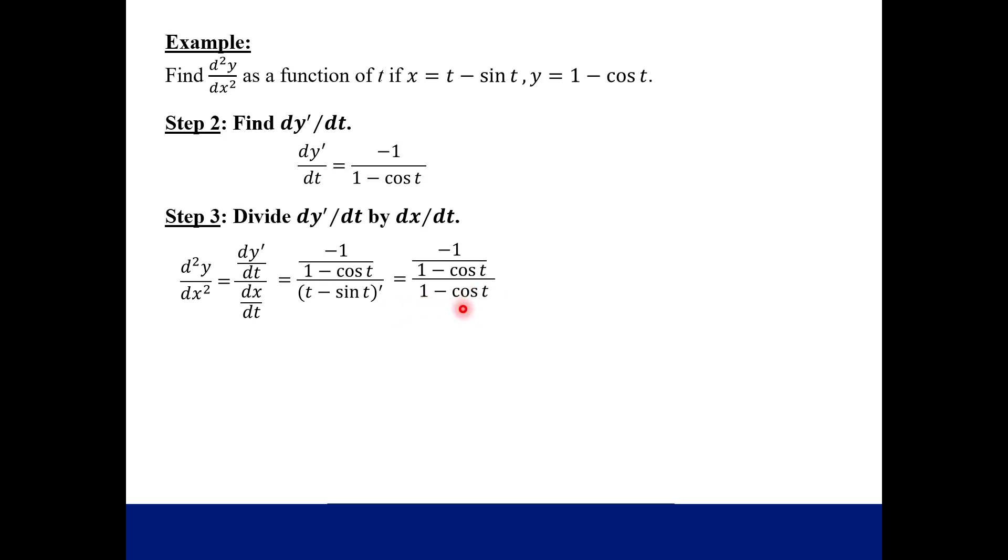And then we just simplify. In this case, you can flip and multiply, multiply by the reciprocal. And final answer, our second derivative of y with respect to x is negative one over one minus cosine t quantity squared. So this is the second derivative of y with respect to x in terms of our parameter t.